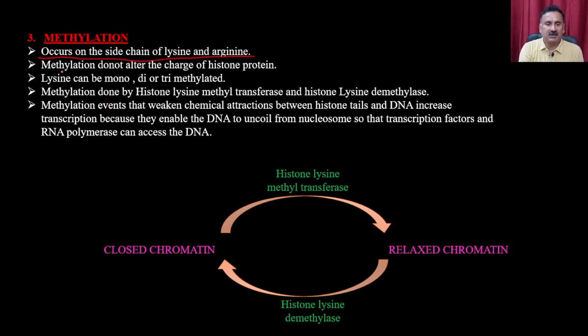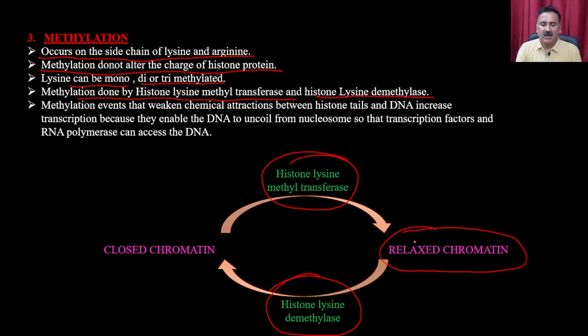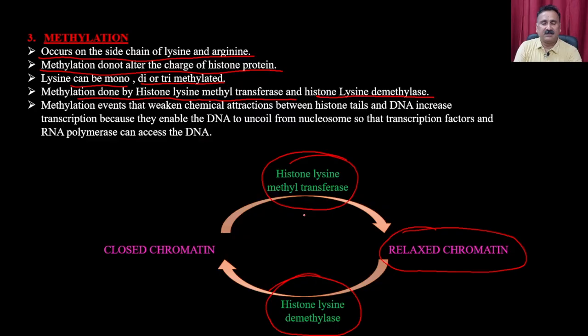Methylation occurs on the side chains of lysine and arginine residues. Unlike acetylation, methylation does not alter the charge but changes the character of the residue. Lysine can be mono-, di-, or tri-methylated. Methylation is done by histone-lysine methyltransferase and reversed by histone-lysine demethylase — methyltransferase relaxes chromatin while demethylase reverses it. This brings us to specialized chromosomes found in certain organisms.